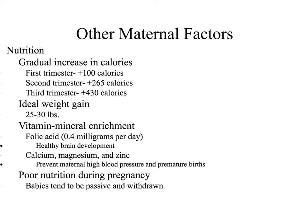Here you can see an important aspect of pregnancy, and that is nutrition. Please note the increase in calories that should occur. Also pay particular attention to the ideal weight gain, and know that vitamin and mineral enrichment is essential for a healthy pregnancy. While all of them are essential, folic acid — which is a derivative of vitamin B — is particularly essential for healthy brain development.